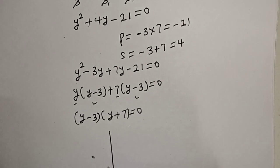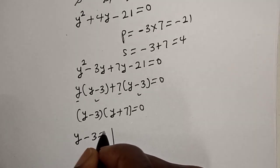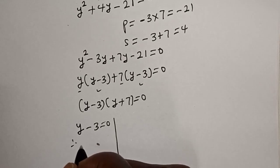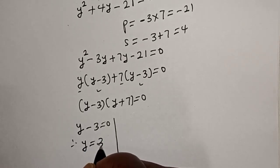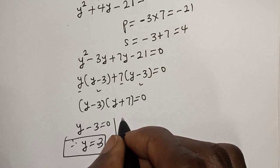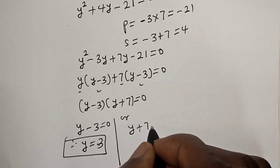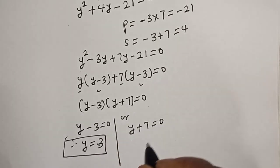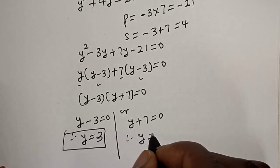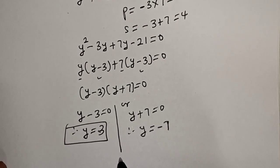There are two cases: y minus 3 is equal to 0, therefore y is equal to 3; or y plus 7 is equal to 0, therefore y is equal to minus 7.